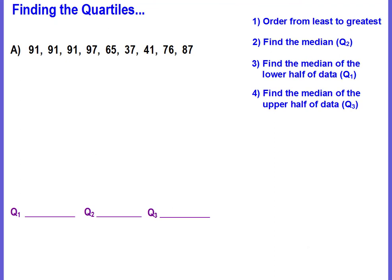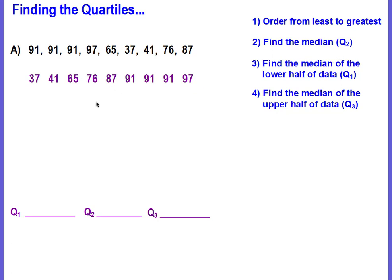So let's practice — we're going to find our quartiles. The first thing you have to do, given your data set, is order it from least to greatest, just like we did when we found the median. The data set has to be from least to greatest. Now you're ready to find the median, which is quartile two, the middle of the data.